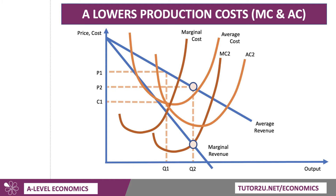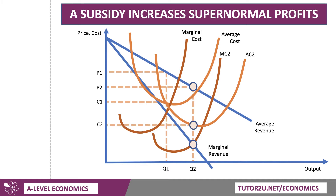But the subsidy has now brought down the average cost of production. At Q2, there's the average cost — C2. So, charging price P2 but the cost is C2. The total profit, shaded in, is much higher than it was before. So, even though you're selling at a lower price, because of the subsidy and the increase in output, you can make a greater supernormal profit.